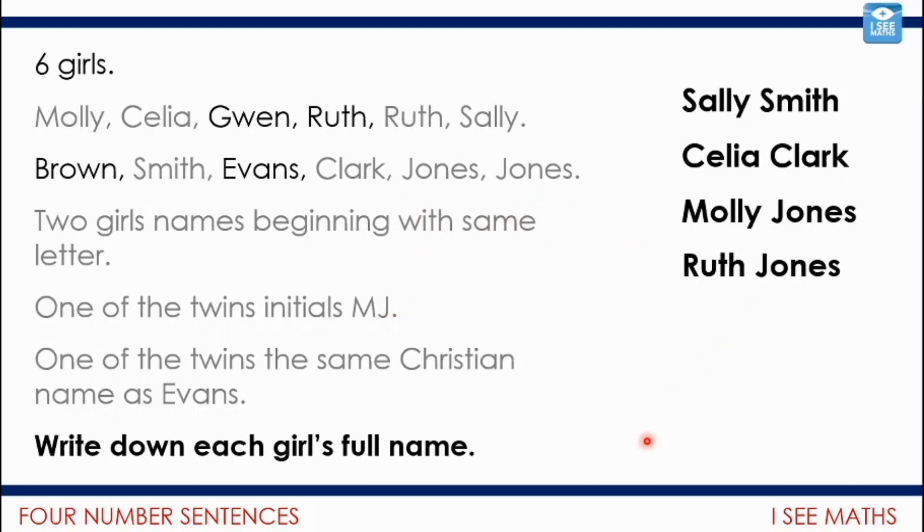Then it says one of the twins has the same Christian name as Evans. So we know that twin surname is Jones. And the name that's repeated twice is Ruth. So it must be Ruth Jones as well. And then that must also leave Ruth Evans. Now, how can we work out the last one? Well, it's the only one left. So Gwen Brown, it must be Gwen Brown. No clues relating to it. But the only surname left is Brown. The only Christian name left is Gwen. Gwen Brown there.